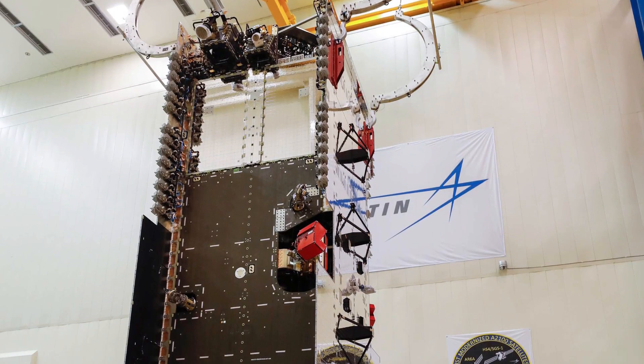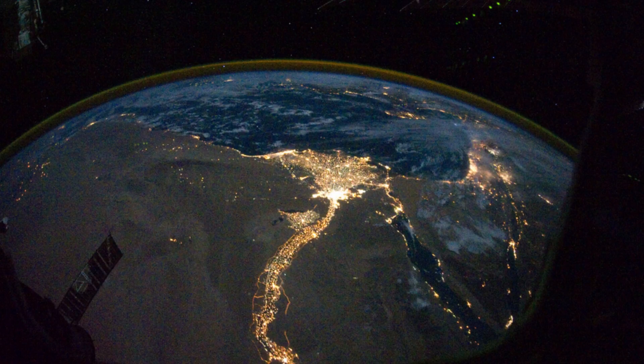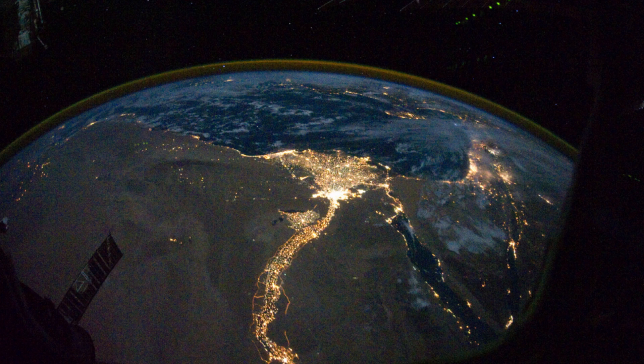This is also why Arabsat 6A wants to go to a geostationary orbit, because they're able to provide constant communication to the Arab nations. It doesn't have to fly over any other countries or locations on planet Earth, but rather it can be placed directly over their Arab countries.